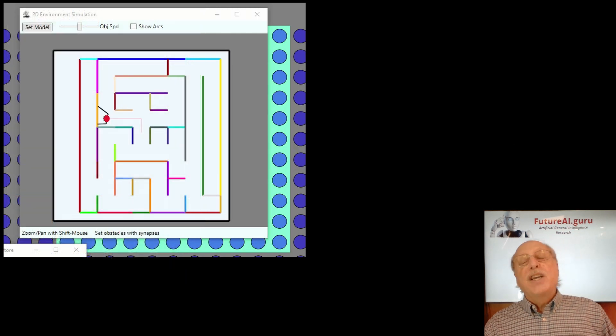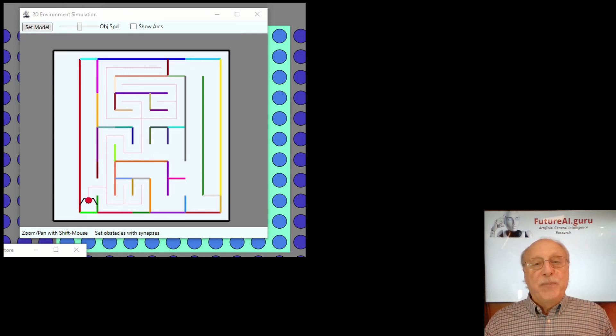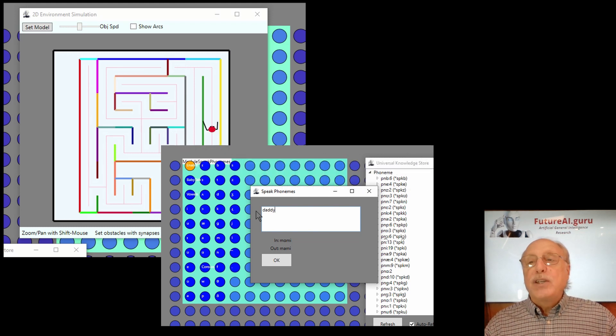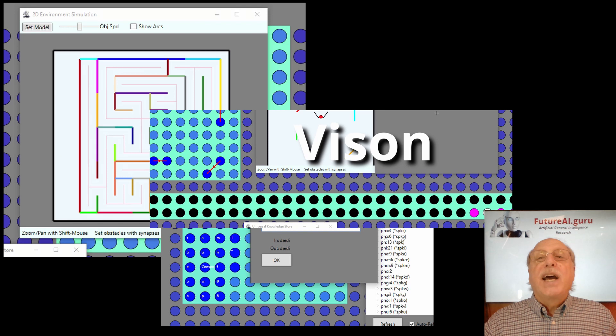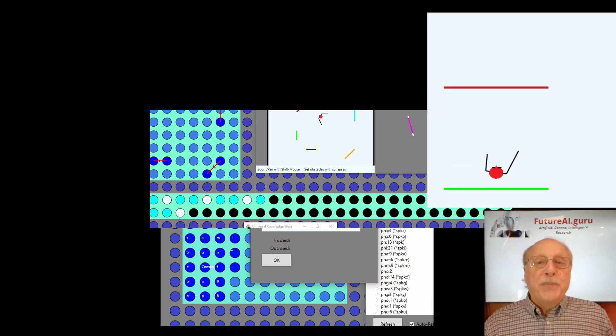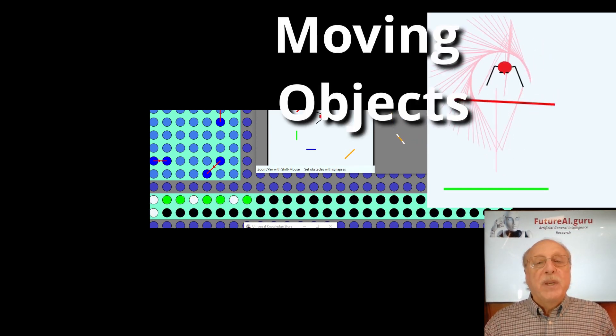For example, Sally can traverse mazes by recognizing landmarks, making decisions, and remembering the outcomes of those decisions. Sally can learn phonemes, words, and phrases, and associate words with actions or physical objects and their attributes. Sally can see objects and estimate distances with binocular vision. Sally can push an object to a goal location. The key is that these different applications share many algorithms.